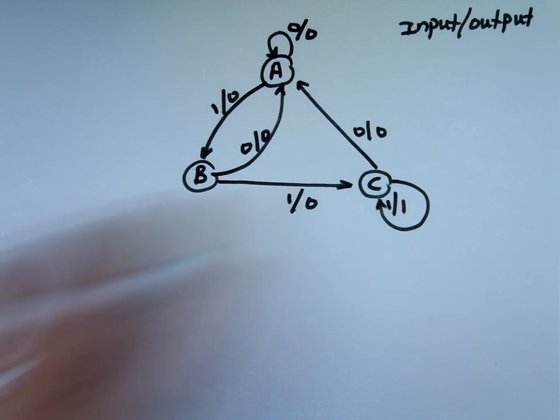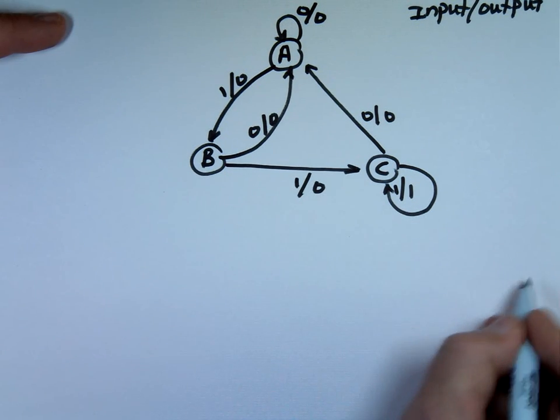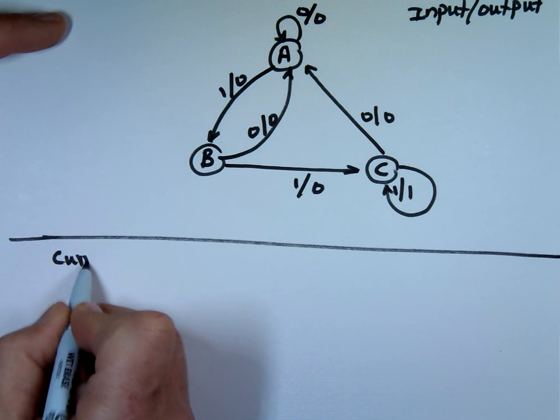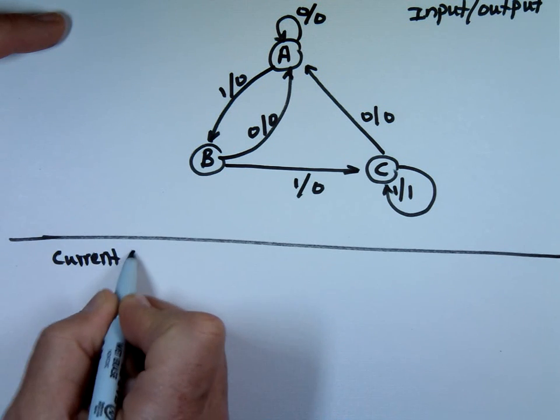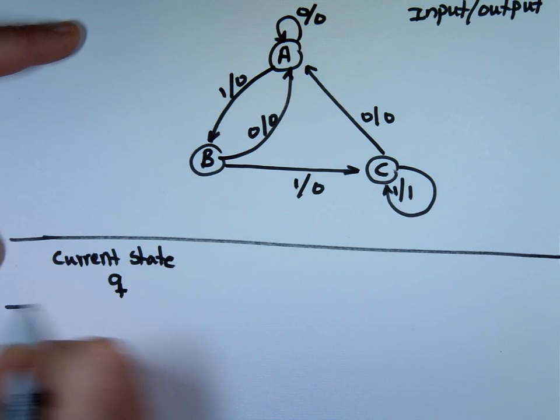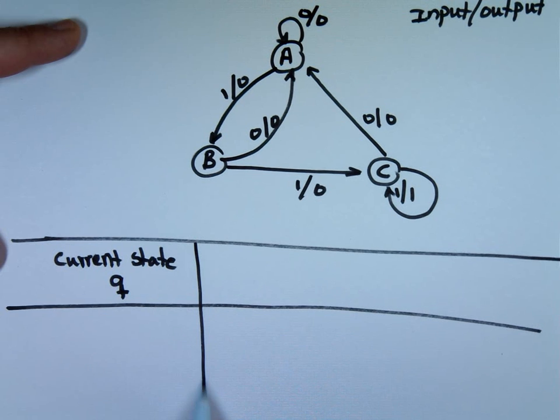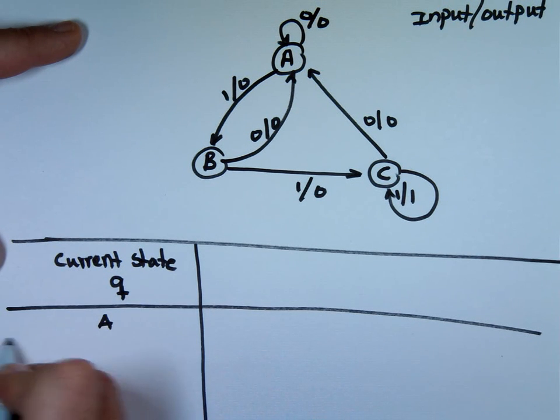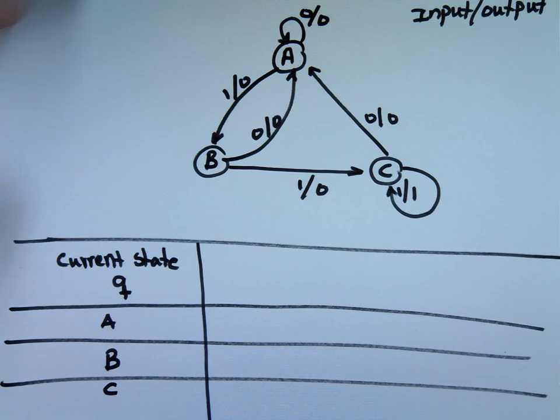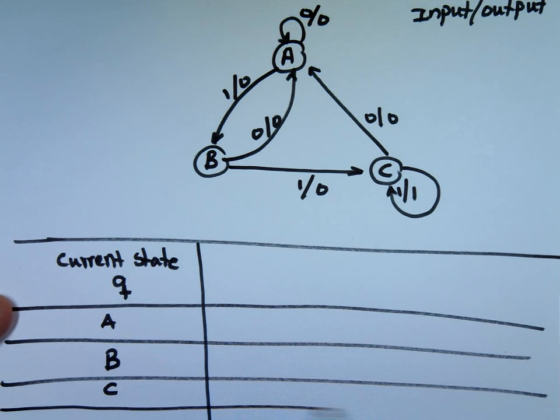State diagram. Let's get the state table. So the first one is going to be called current state. That's Q. You only have three states. A, B, and C. Bless you. There is no D. Bless you again.